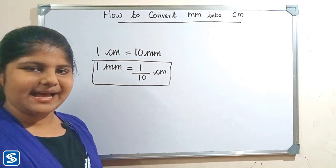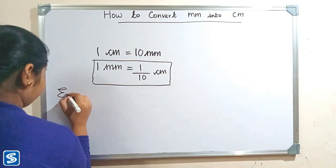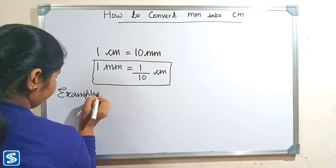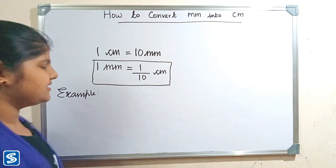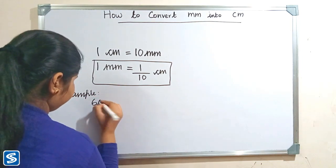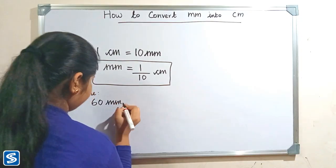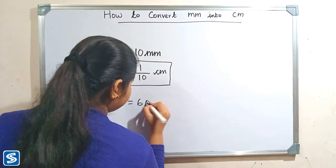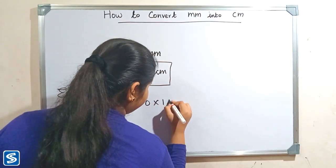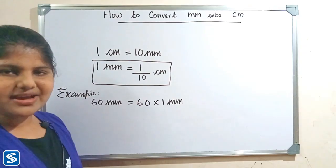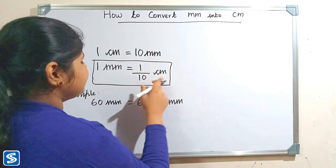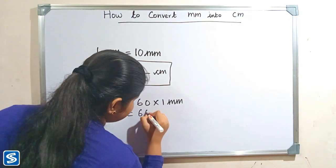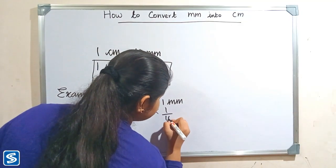So now we will take some examples. For example, we can take 60 millimeter. So 60 millimeter can be written as 60 multiply 1 millimeter. Now we have to substitute 1 by 10 centimeter in the place of 1 millimeter. So 60 multiply 1 by 10 centimeter.